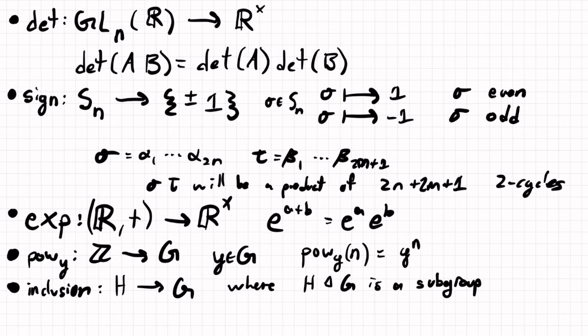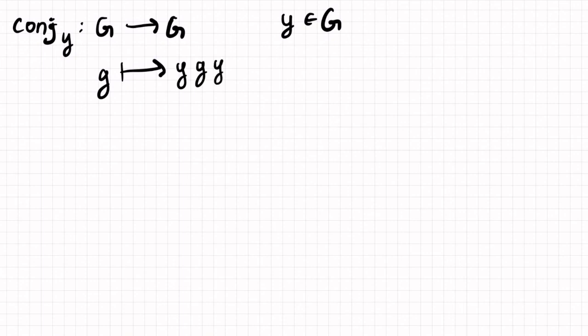I'll even give its own page. And this is the example of conjugation. So conjugation by y, from g to g. So let's say y is an element of g. And conjugation is, so the element g maps to y times g times y inverse. So what's the idea here? We multiply by y, then we apply g, then we apply the inverse.